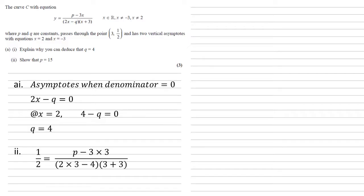we get that 1/2 equals p minus 3 times 3 over 2 times 3 minus 4 times 3 plus 3. This simplifies down to 1/2 equals p minus 9 over 2 times 6 or 12. Multiplying both sides by the 12 gives us that 6 equals p minus 9 and p equals 15 as required.